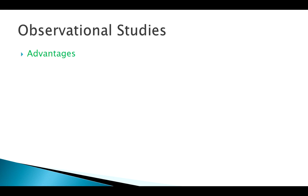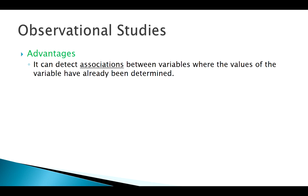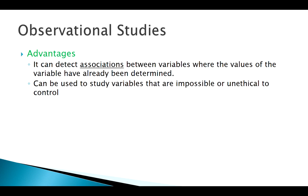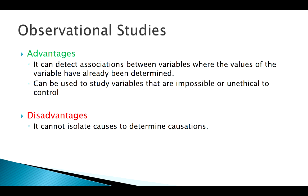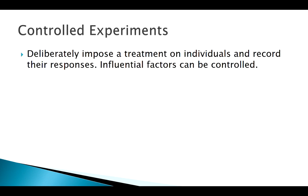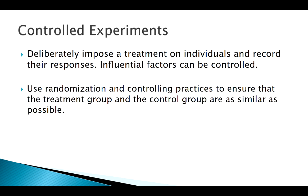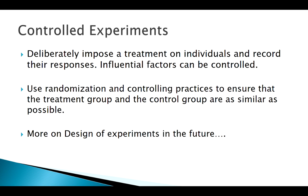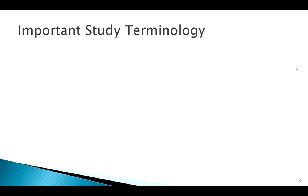All these data collection methods have pros and cons. With observational studies, we can find interesting associations and study pretty much anything we want — if you're interested in something, you can go find someone who is doing it or has that characteristic. But the association we find may be bogus because of a lurking variable, and we can't necessarily isolate cause and effect to claim causality. That's where controlled experiments come in — we'll talk about those in the next section.